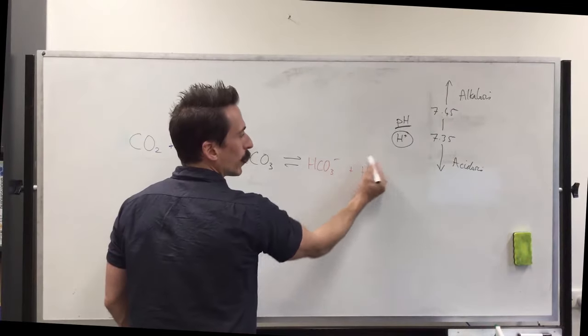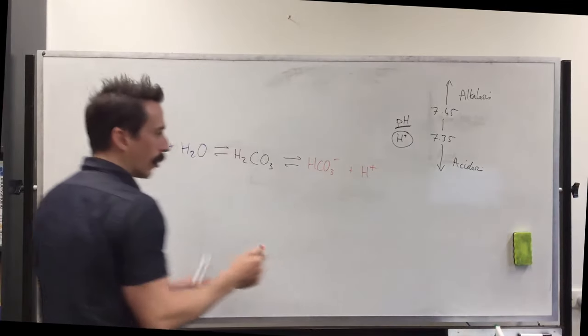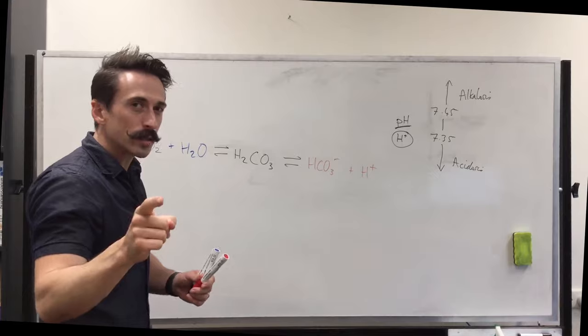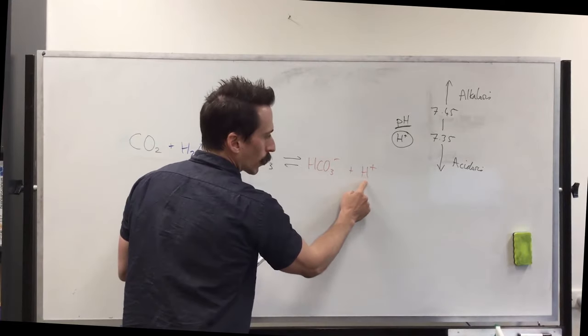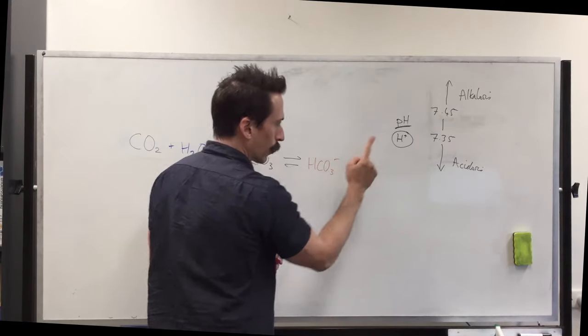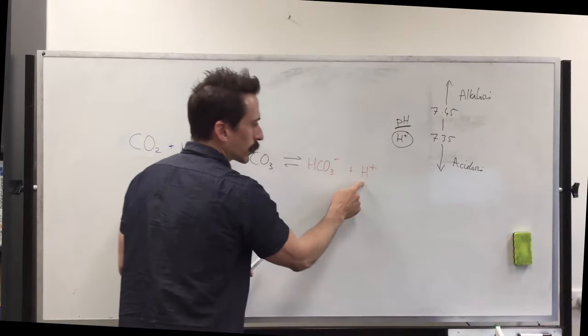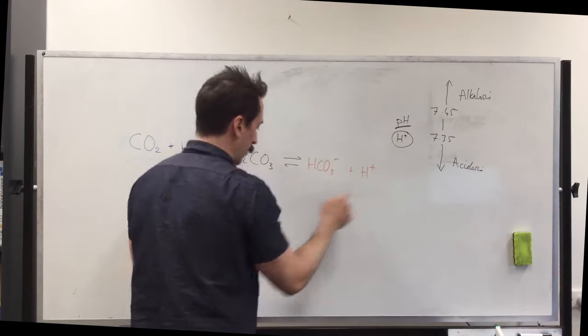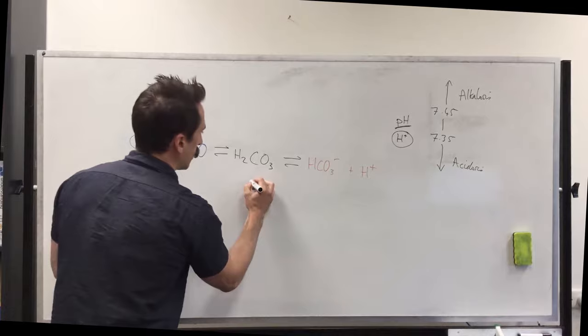Again, when we measure pH, we're just measuring this. So if somebody has acidosis, it means that the quantity or concentration of this is going up. If they've got alkalosis, the concentration of this is going down. Now, think of this on a seesaw.